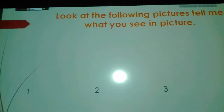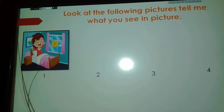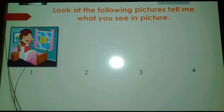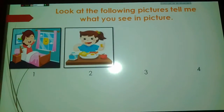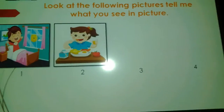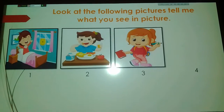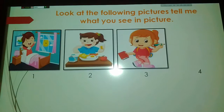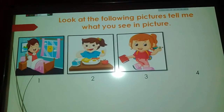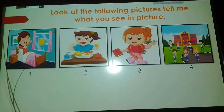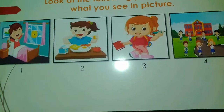Look at the following pictures and tell me what you see. Here we can see a girl in a bed. We can also see a girl at a table with breakfast. In her hand there is a book and in another hand a pencil — that means she is studying or working. Here we can also see a school ground or playground where students are standing in front of the school.